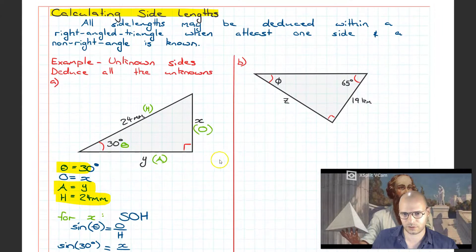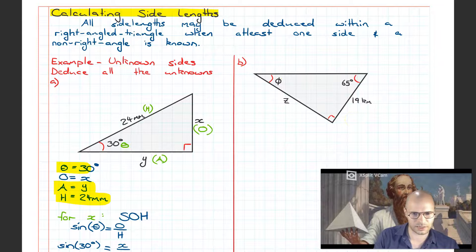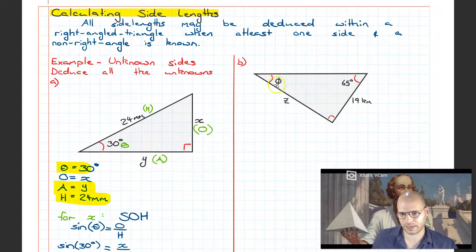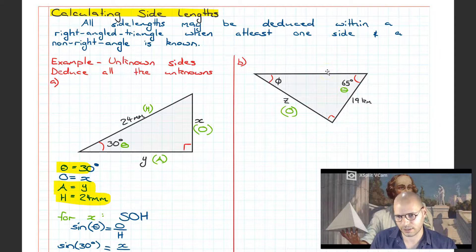Moving on to example B, we're presented with another right-angled triangle. This triangle has been rotated so it's not in the form that we saw over here. On top of that, we've got another unknown value, that being this value called phi. I'm going to first label it. 65 degrees, that will be the angle of interest because it's given to me. Opposite the angle of interest, we have our opposite side.